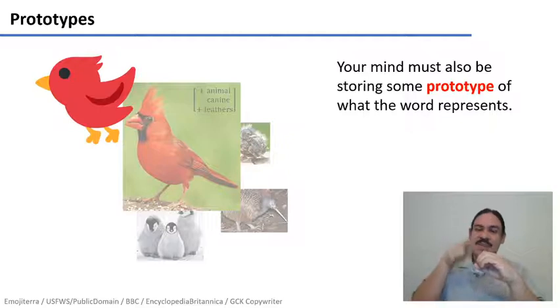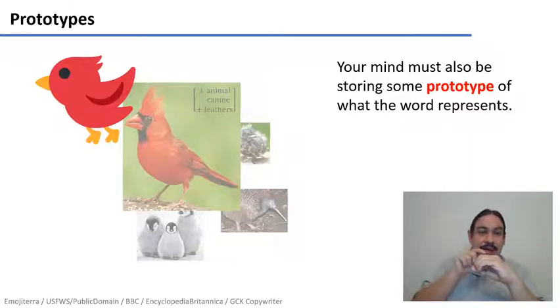And then fuzzier edges around the meaning, which have examples of objects in the real world that are birds, but that maybe don't meet all of the characteristics of the prototype.